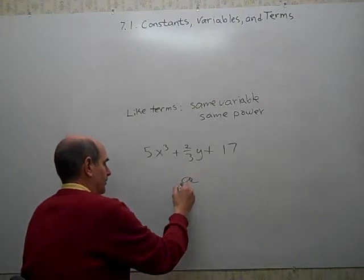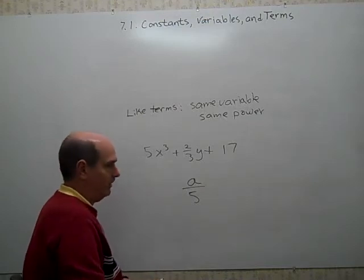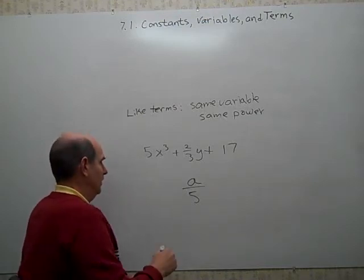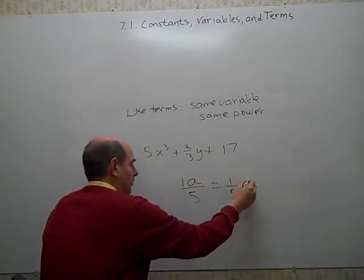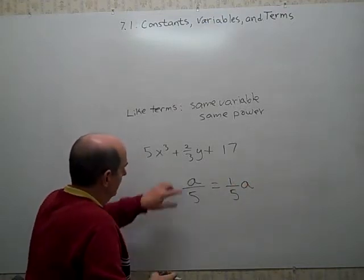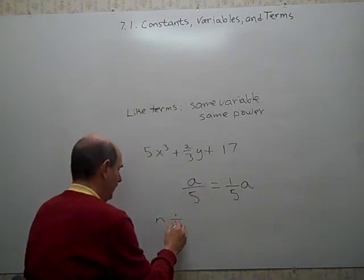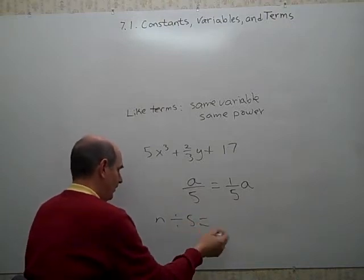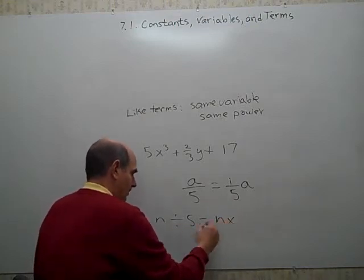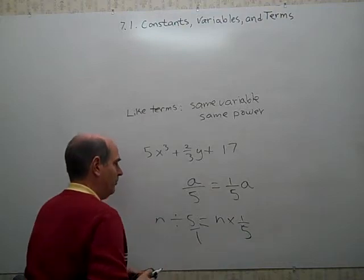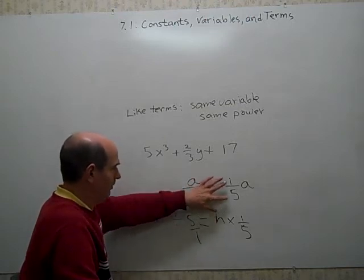If you have something like this, this is a little tricky. If you have a over 5, it's not apparent what the coefficient is for this. But you could put a 1 here, and it's true that this is the same as 1 fifth a. Back to our original. Dividing by 5 is the same as multiplying by 1 fifth. You might remember that. If you have a number divided by 5, you can do keep change change times. And then this has to change. Just change division and multiplication. And this would be 1 fifth. So a divided by 5 is the same as 1 fifth times a. Then it's easy to identify the coefficient of this as being 1 fifth.